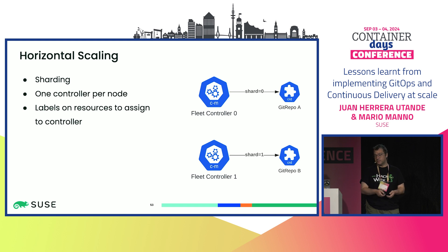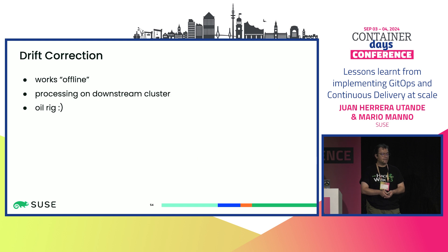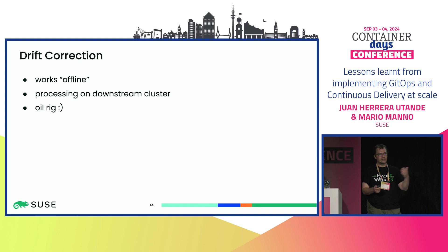We recently implemented horizontal scaling with a simple approach: install Fleet with multiple controllers, assign them to certain nodes if needed, and put labels on resources so each controller knows what to act on. Our drift correction works offline — all processing is done on the downstream cluster. For the oil rig scenario, this is a great approach because the satellite link is so small you don't want drift correction going over it.